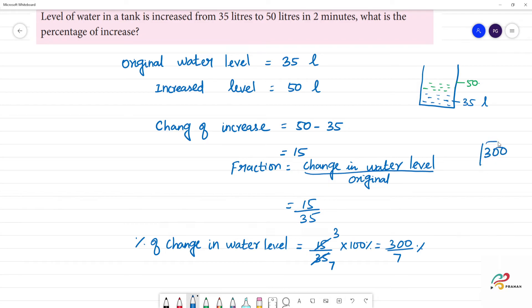300 divided by 7, 7 into 28 gives 4, remainder 2. Put 0, 7 into 20 gives 14, remainder 6. The answer in mixed fraction is 42 and 6 by 7 percentage.